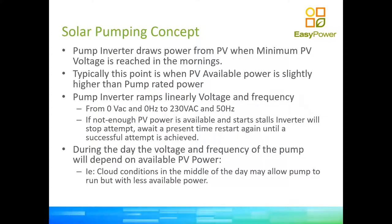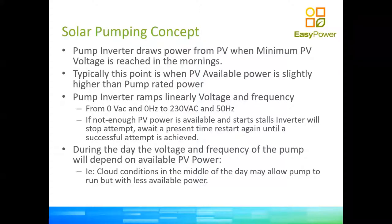Solar pumping takes DC power from solar panels and converts it to AC to run an AC pump. We can do AC pumps from 500 watts to 200 kilowatts. Typically a pump inverter changes the frequency of the pump — every motor or pump runs at about 50 hertz. The VSD starts at a low frequency of about 37 hertz, and as the day progresses and the voltage on the panels increases, it ramps up to 50 hertz at its peak. As the day winds down, it starts reducing frequency again.